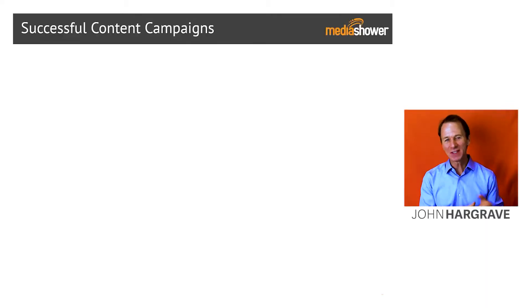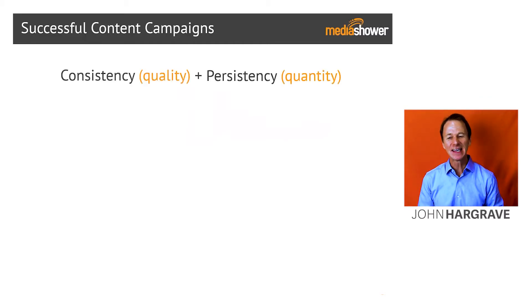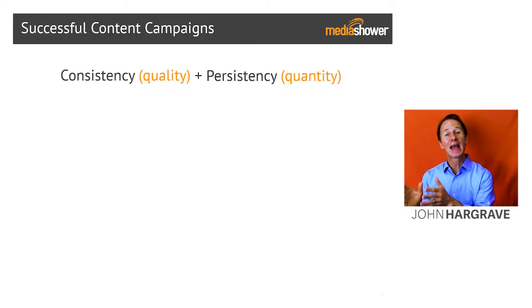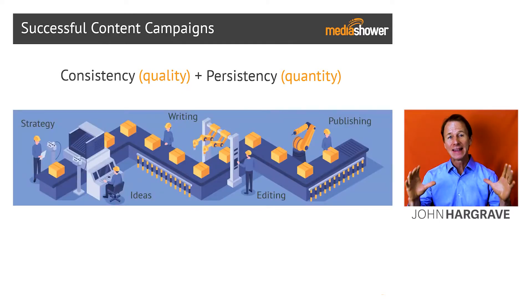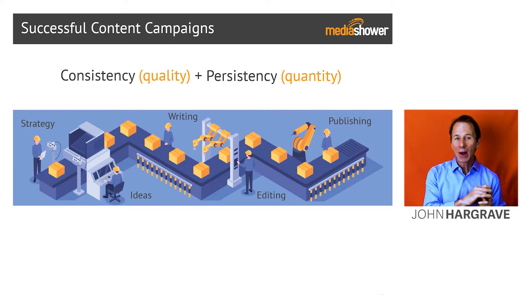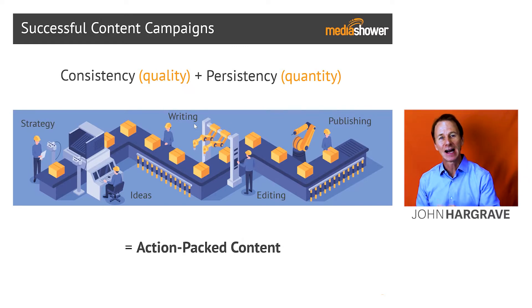As we've discussed, successful content campaigns have two things: consistency and persistency. Quality and quantity — we need both. And to do that, we've created the assembly line, and what comes out of this assembly line is action-packed content.